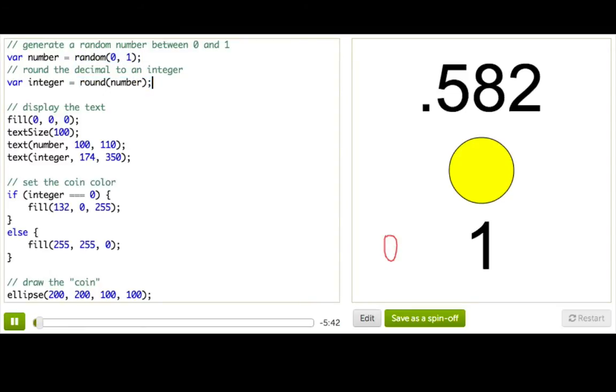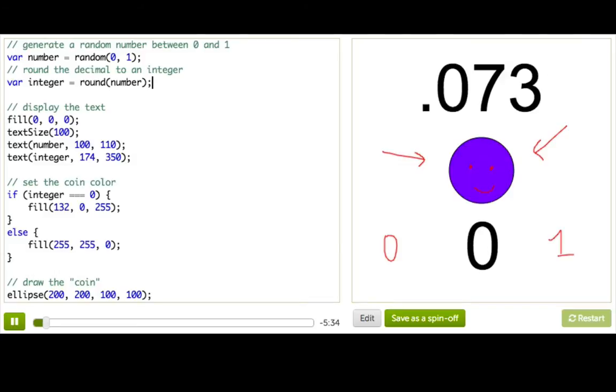So this gave us a number that was either 0 or 1. And then we illustrated our super realistic coin with this ellipse that's either purple or yellow depending on what the number was.